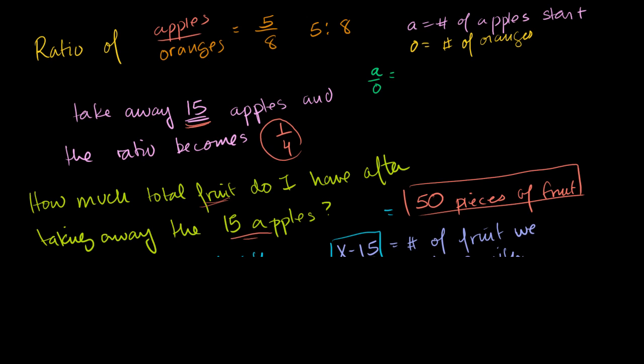We can say that the ratio of apples to oranges is equal to 5 to 8. The number of apples we start with divided by the number of oranges is 5 to 8. Then we remove 15 apples. So if we remove 15 apples, we have A minus 15 apples. And they tell us the ratio of apples to oranges becomes 1 to 4. So A minus 15 over O equals 1 over 4.